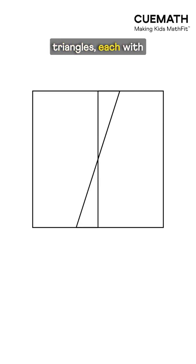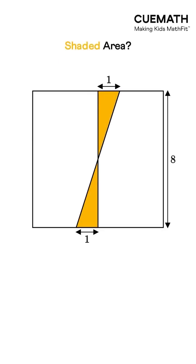A square has two triangles, each with a base of one centimeter. The side length of the square is eight centimeters. What's the shaded area?